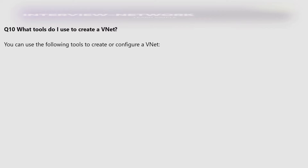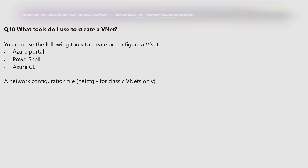What tool do I use to create a VNet? You can use the following tools to create or configure a VNet: Azure Portal, PowerShell, and Azure CLI. A network configuration file (NetCFG) is only used for classic VNets.